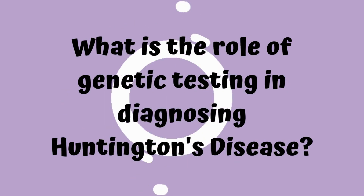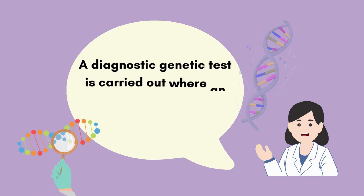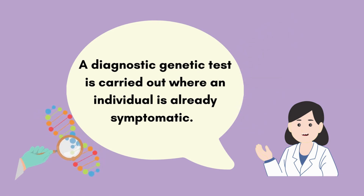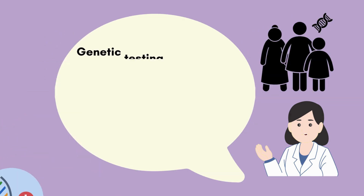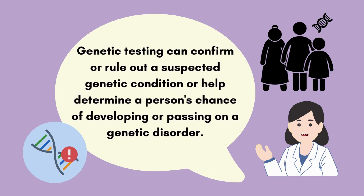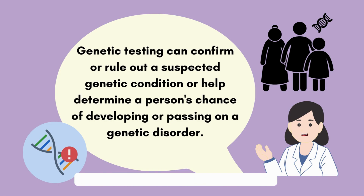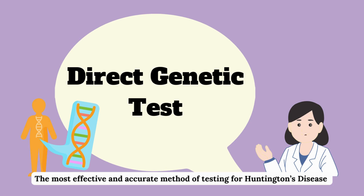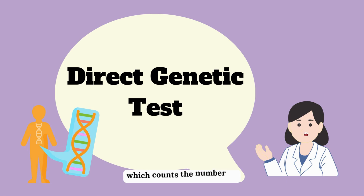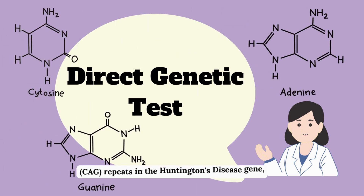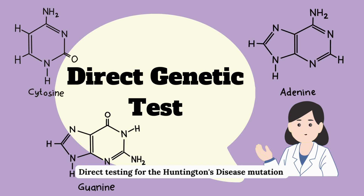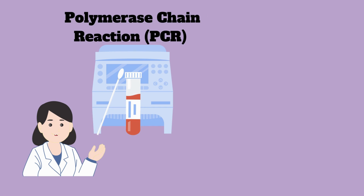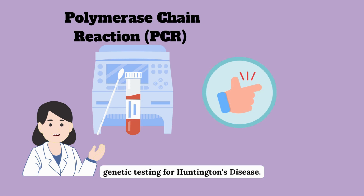Genetic testing plays an important role in diagnosing Huntington's disease. A diagnostic genetic test is carried out when an individual is already symptomatic, requiring equivocal motor signs. Genetic testing can confirm or rule out a suspected genetic condition or determine a person's chance of developing or passing on the disorder. The most effective and accurate method is the direct genetic test, which counts the number of CAG repeats in the HTT gene using DNA from a blood sample. Polymerase chain reaction has simplified testing, making it faster, simpler, more accurate, more affordable and more widely available.